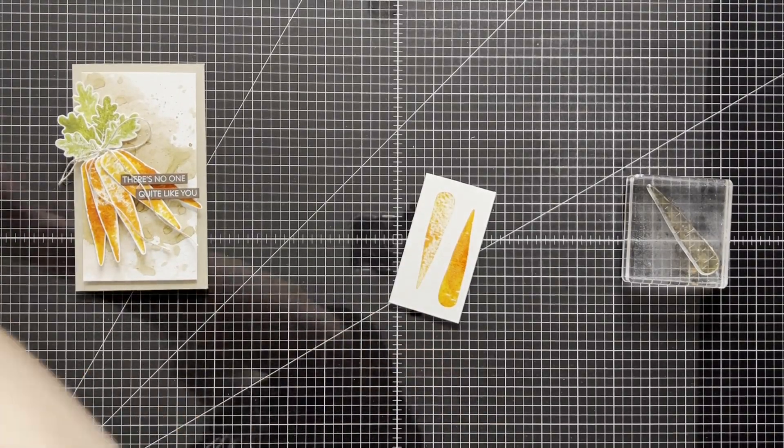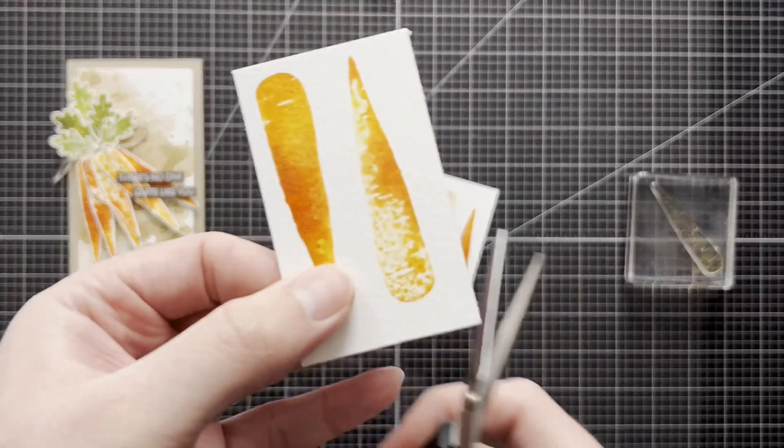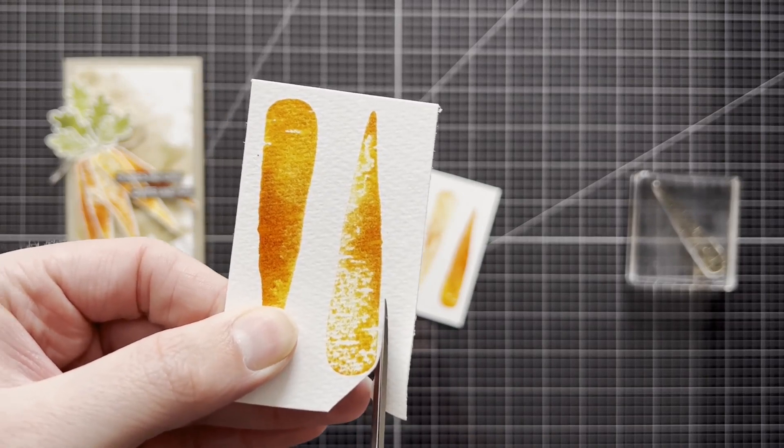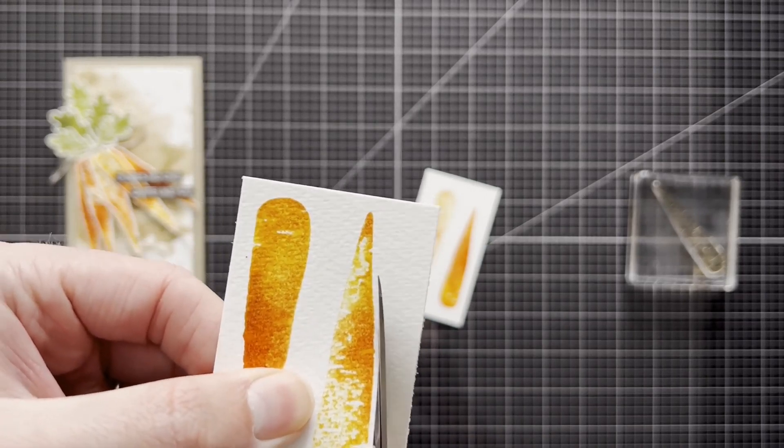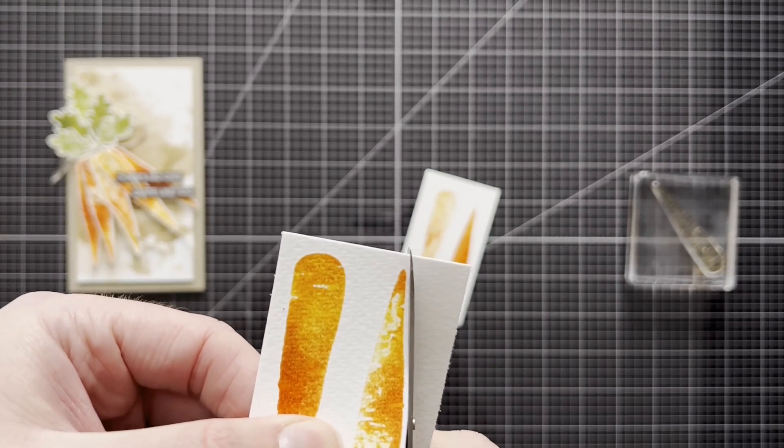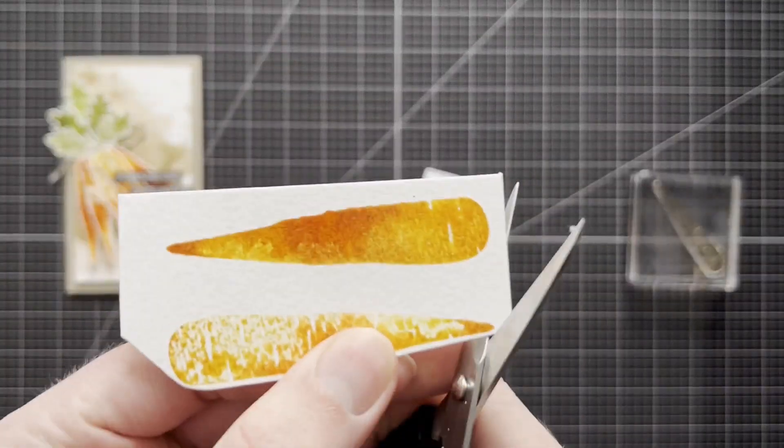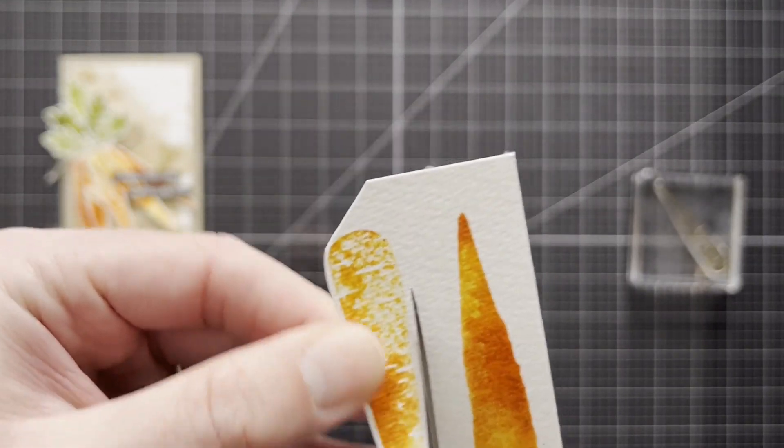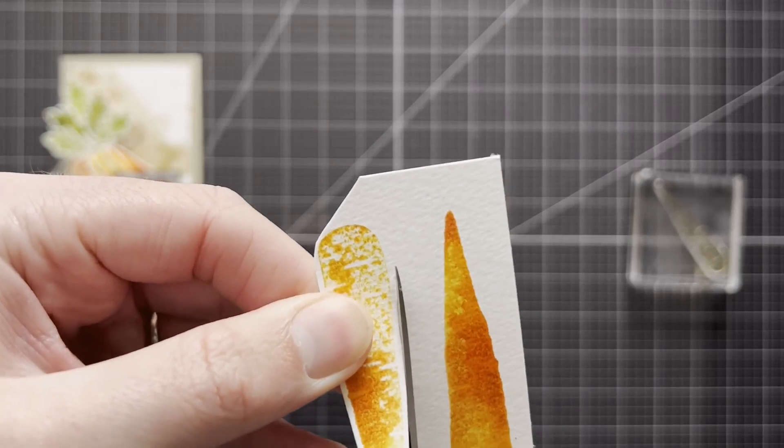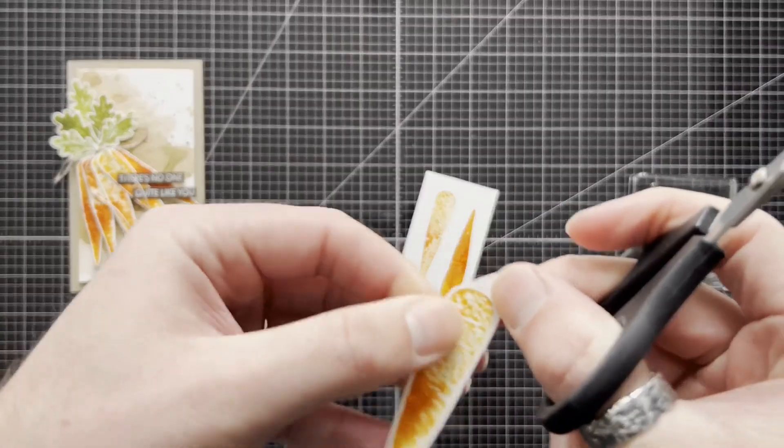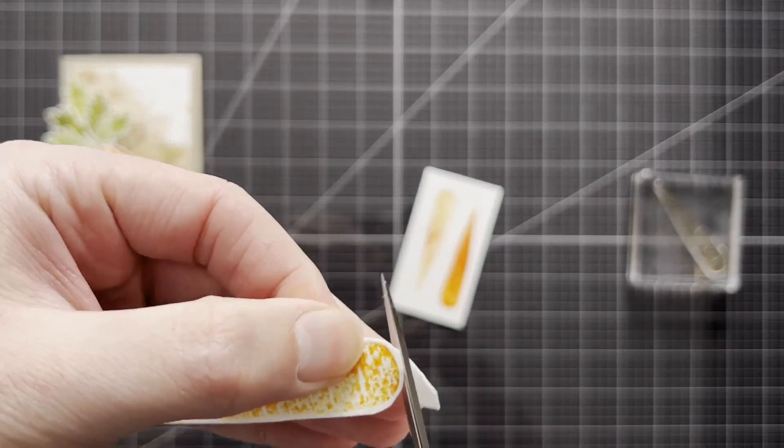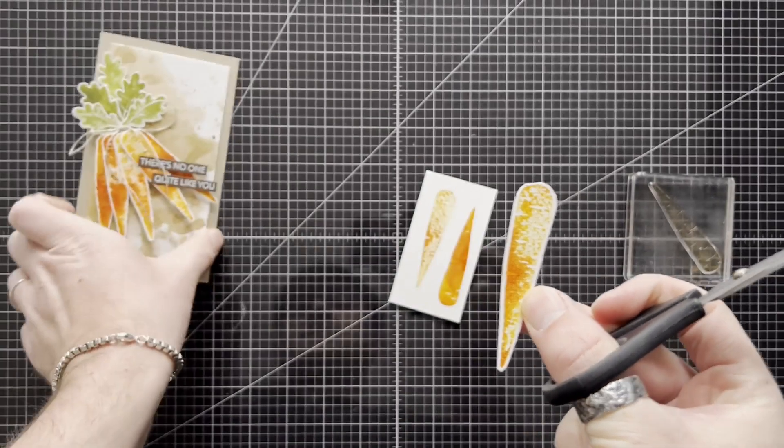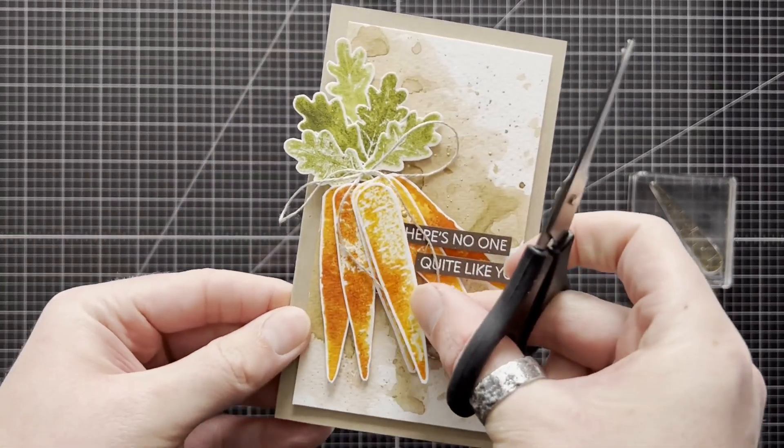And then all you have to do afterwards is once your image is dry, just quickly cut around them, which you can spend a lot more time doing. So it's nice and neat. And there you have your carrot, which you can use on your card.